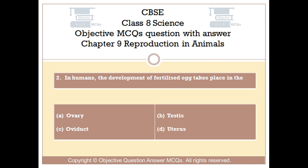Question number 2. In humans, the development of the fertilized egg takes place in the: Option A: Ovary. Option B: Testis. Option C: Oviduct. Option D: Uterus.